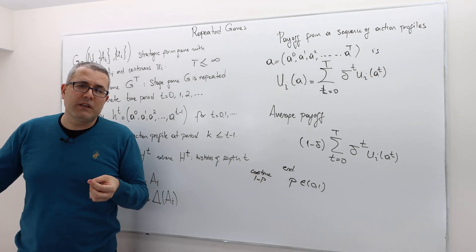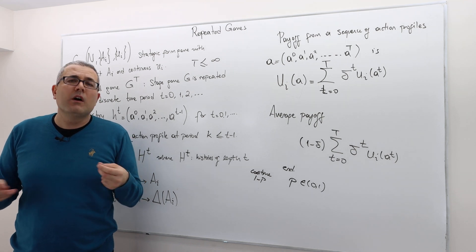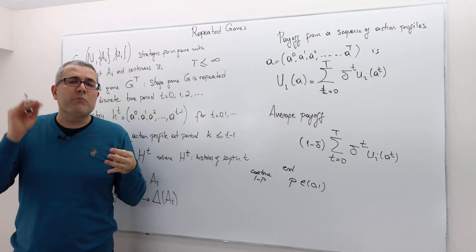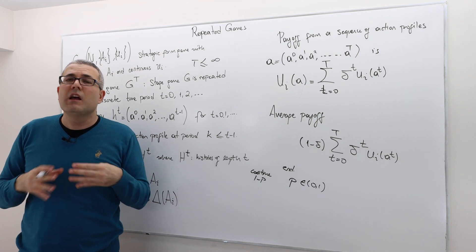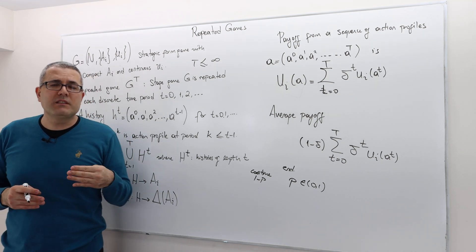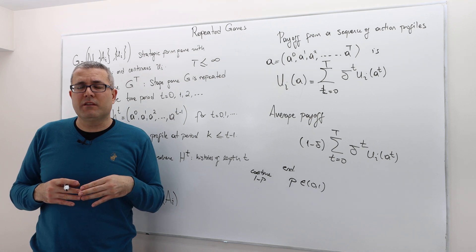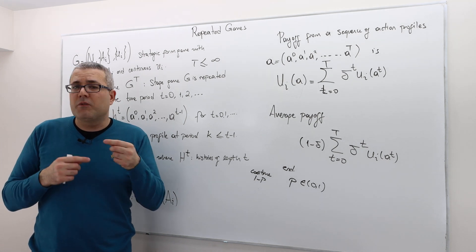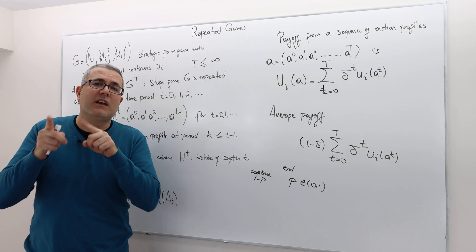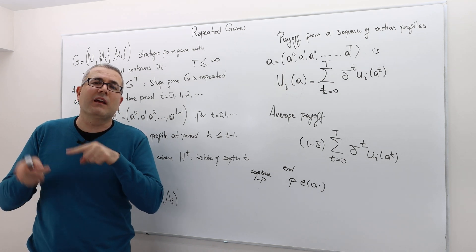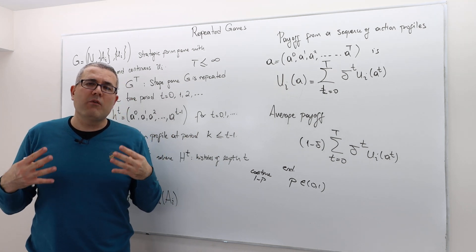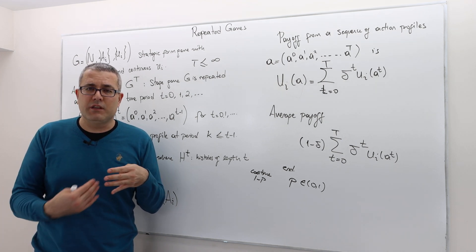The probability that the game will last forever approaches zero. But nevertheless, for any finite time period you think of, there is some positive probability the game will last that long. The key point is that players do not know exactly when the game is going to finish. If players know when the game is going to end, they can do backward induction — planning what to play in the last stage, then working backwards.